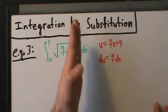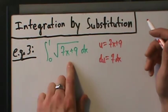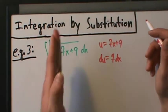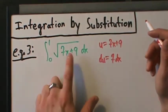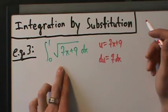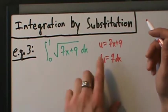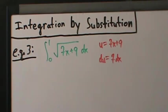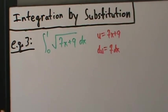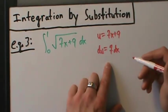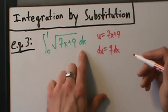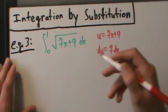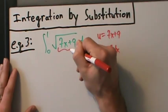The inside function is 7x + 9 because that's inside the square root — a function inside of another function. Let u be the inside function. So anyway, if du = 7 dx, then what's dx going to be?